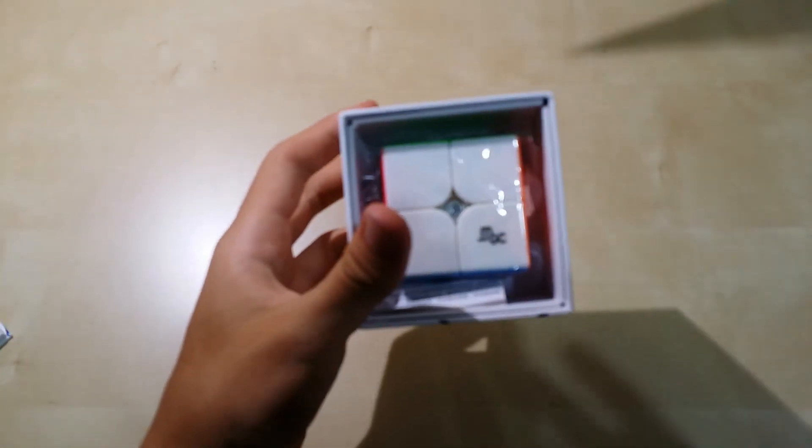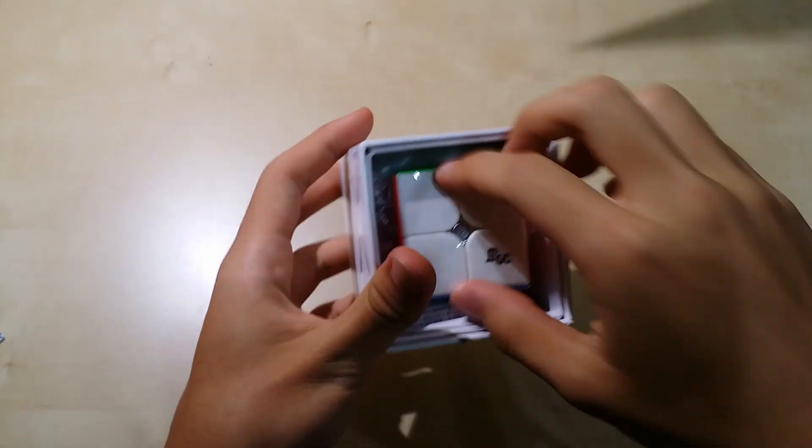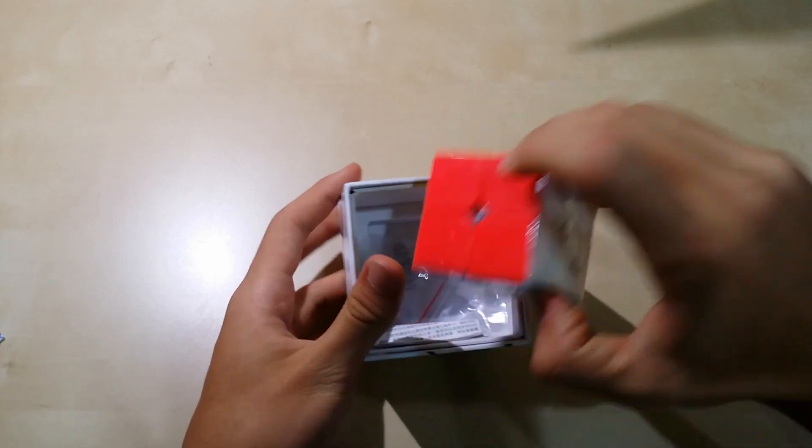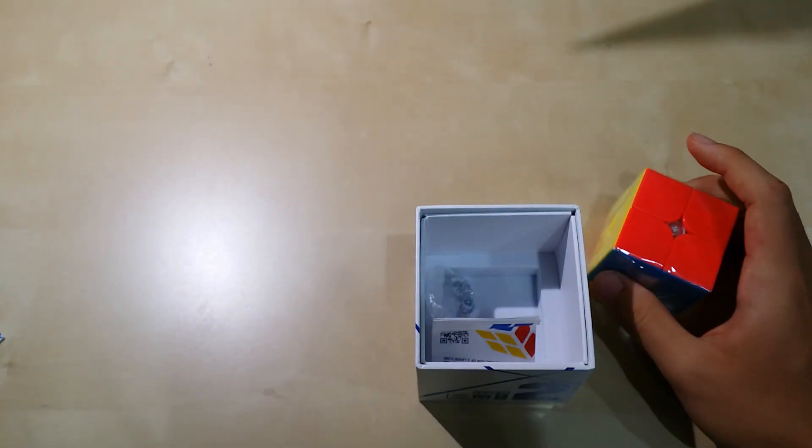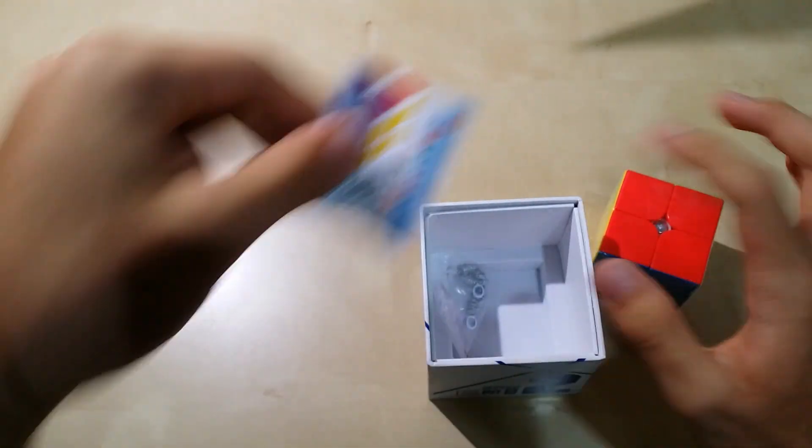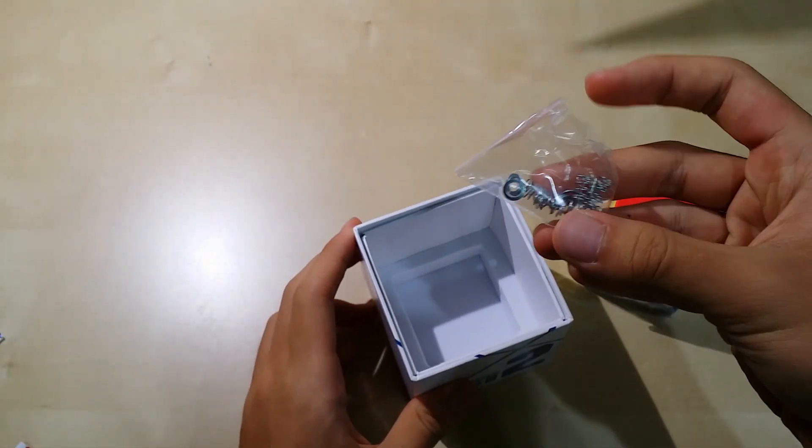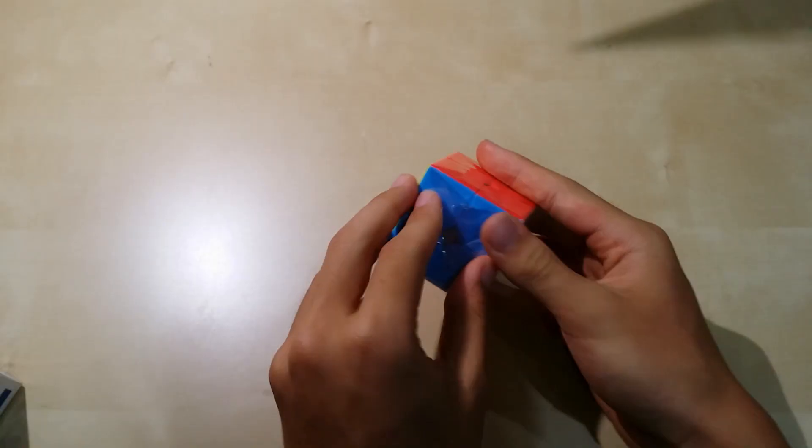So there we go. There's the cube. Inside we have extra magnets, a pamphlet, and an extra set of springs and washers, and the cube itself.